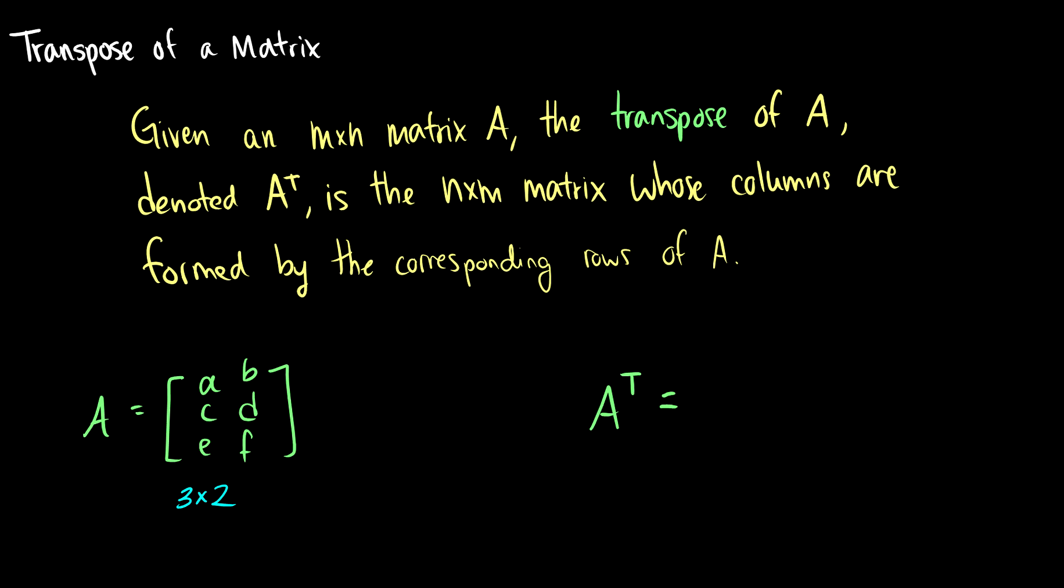In this video we'll talk about the transpose of a matrix. Given an M by N matrix A, the transpose of A, which we denote with a little t above the A, is the N by M matrix whose columns are formed by the corresponding rows of A.